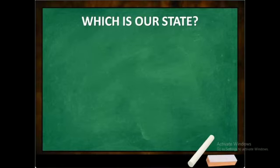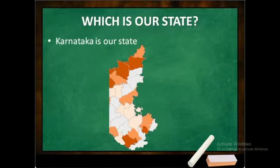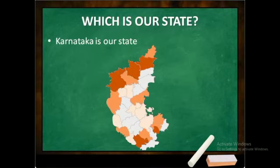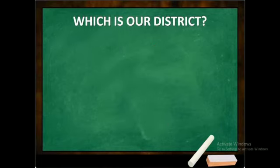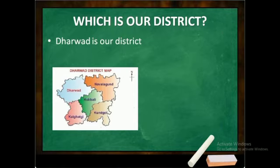Karnataka is our state. Here you can see the map of Karnataka with small maps of districts on it. All the districts together make Karnataka. Our district is Dharwad, and this is a picture of Dharwad district.